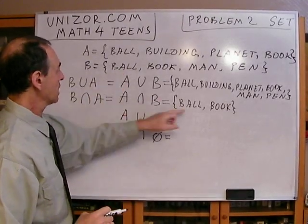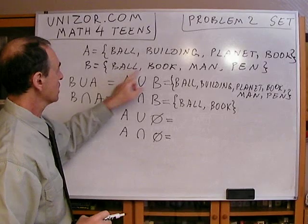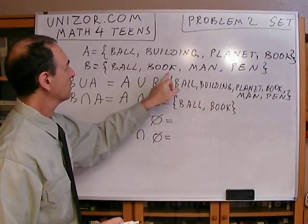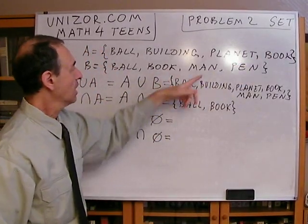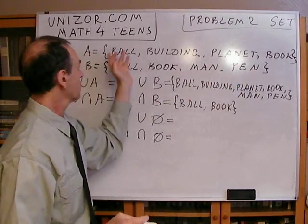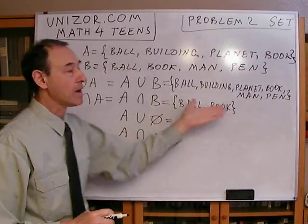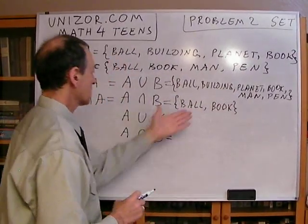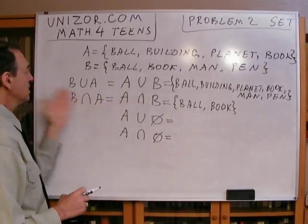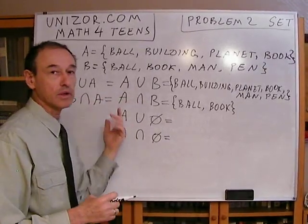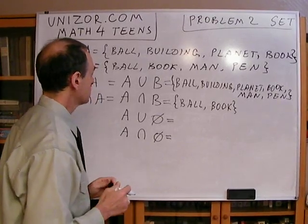Ball, is it common? Yes, it is, because A also contains it. Book, is it common? Yes, because A contains it as well. Man and pen are not common, because A does not contain them. So, we came up with the same result. It basically illustrates that A and B, or B and A are all interchangeable in the set operations. It's all commutative.